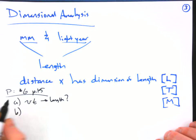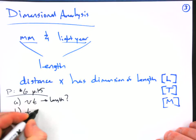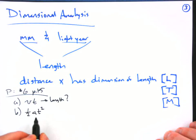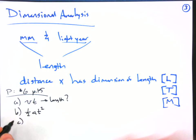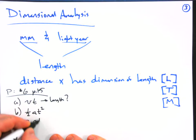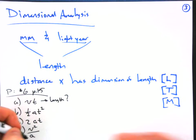Part B, we are given one-half acceleration times time squared. Lowercase a is acceleration. In part C, we are given two times acceleration times time. And in part D, we are given velocity squared divided by acceleration.